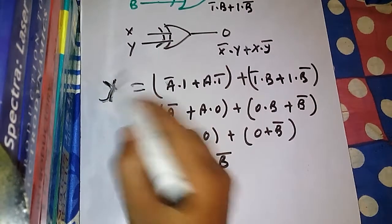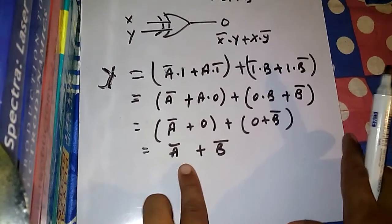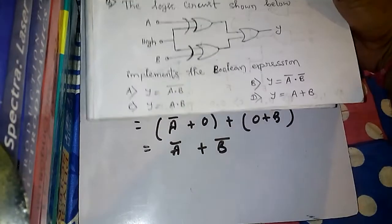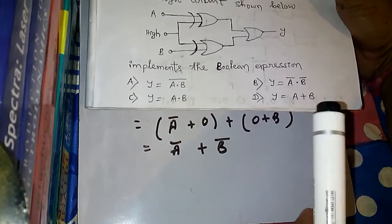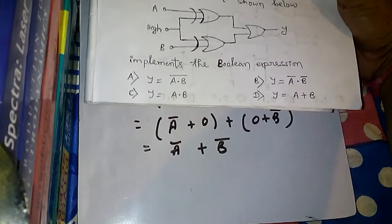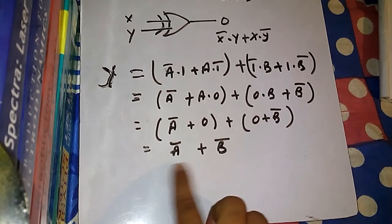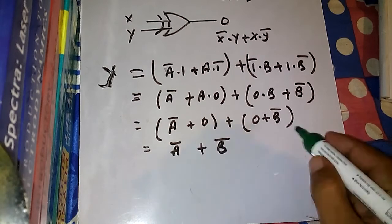Now does this match with any of the given options? In our problem, we see that it doesn't match with any of the options, because we have A bar plus B bar, but in the options we see A plus B but not A bar plus B bar. So it seems we have to do some more simplification using the laws of boolean algebra — specifically De Morgan's law.